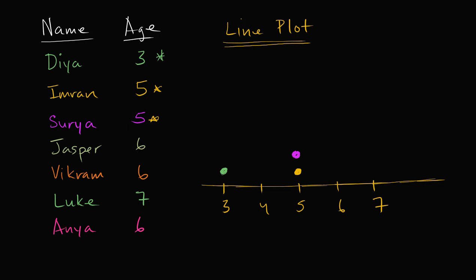Then you have Jasper, who is six — that's one person who is age six. Then you also have Vikram, who is age six, so let's put him in the age six bucket. Then we have Luke, who is seven — that would be a dot right over there. And finally I have Anya, who is also age six.